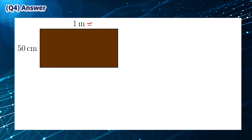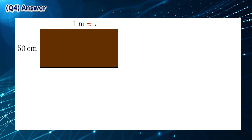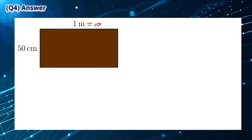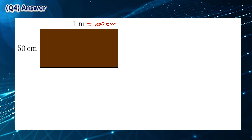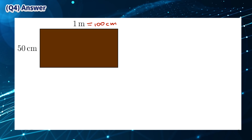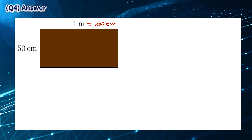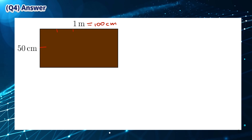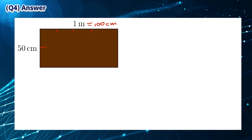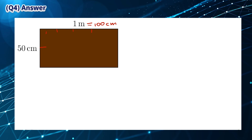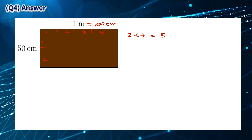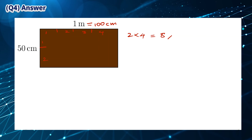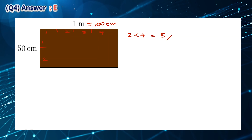Since 1 meter is equal to 4 × 25 cm and 50 cm is equal to 2 × 25 cm, the rectangle can be divided into 4 squares horizontally and 2 vertically, for a total of 4 multiplied by 2, which is 8 squares. This means that the answer is E.